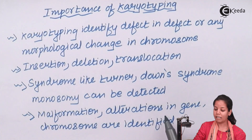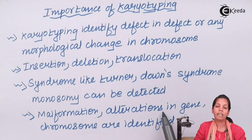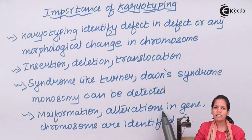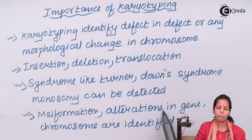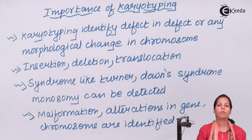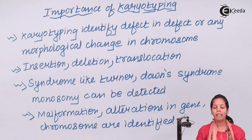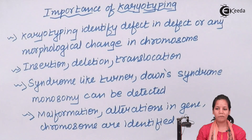Malformations and alterations in the chromosomal region which could alter or make a gene defective are certain important parameters that make karyotyping a very important area of study. So students, in this part of the chapter we studied the importance of karyotyping. I hope you are very clear with this concept. Thank you.